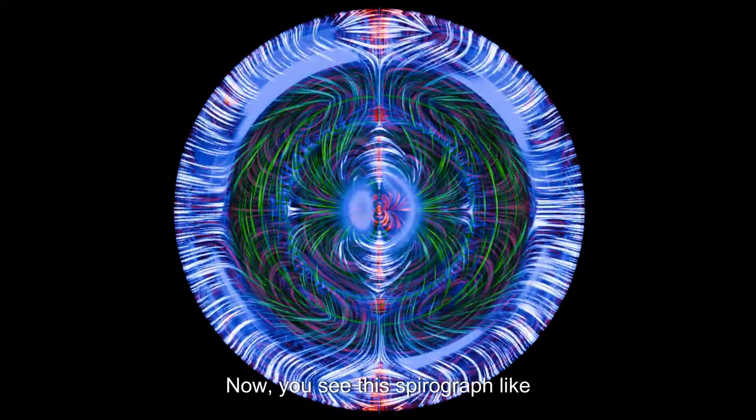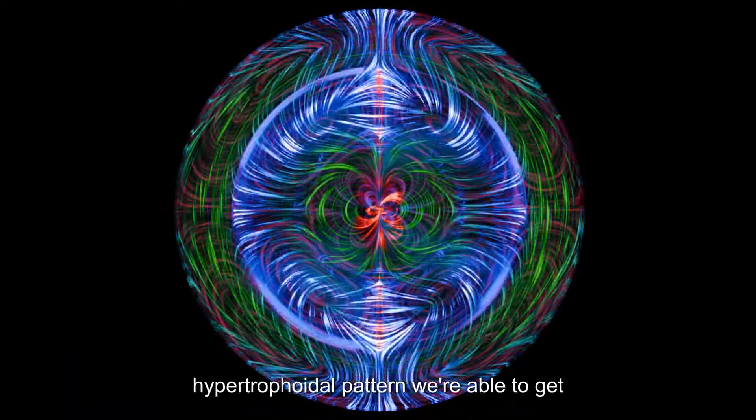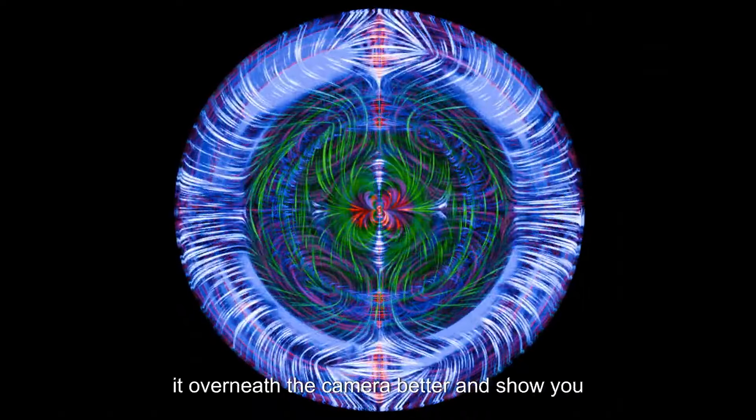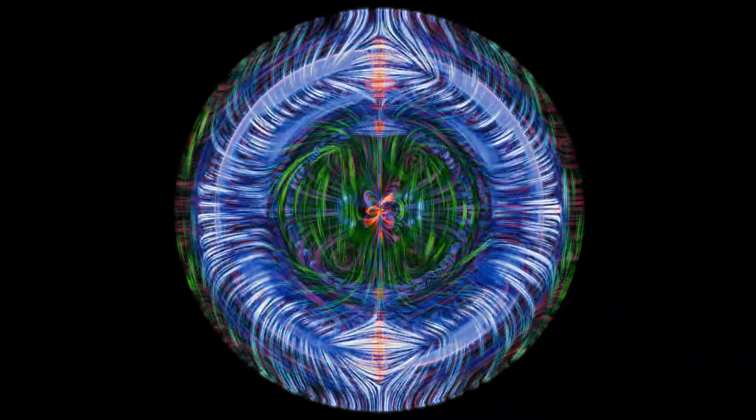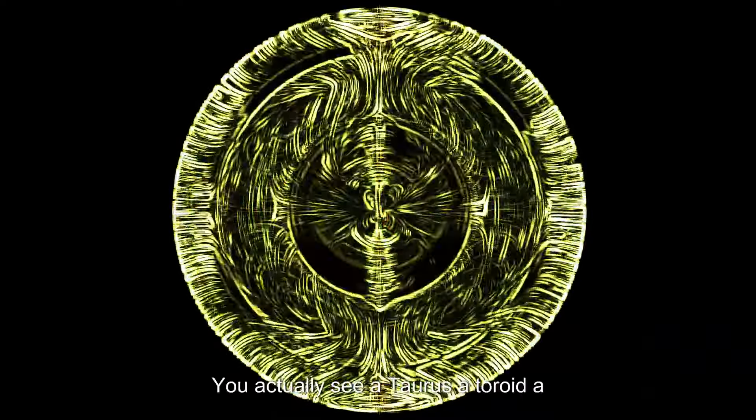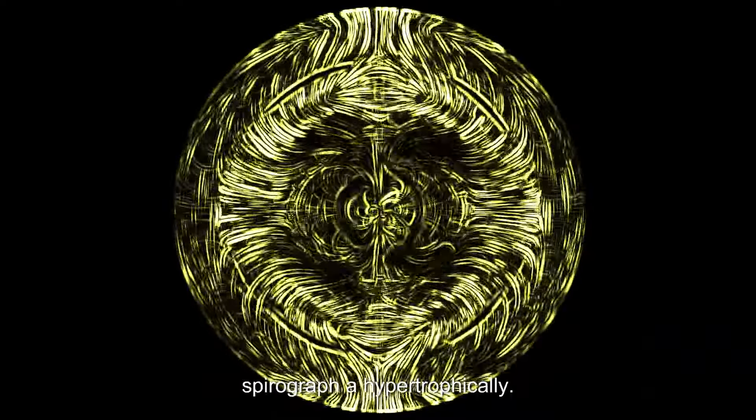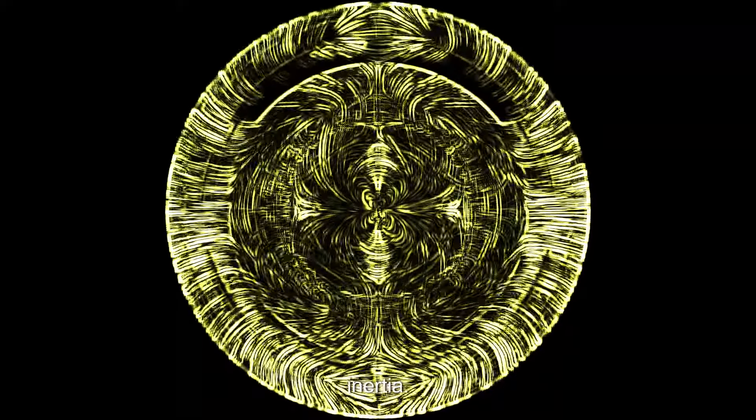You see this spirograph-like hypertrochoidal pattern. You're able to get it underneath the camera better and show it to you in a slightly uncompressed fashion. There you go. You actually see a torus, a toroid, a spirograph, a hypertrochoid. That's the expression of the loss of inertia.